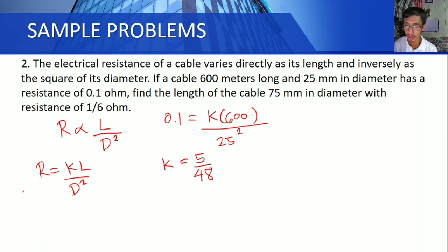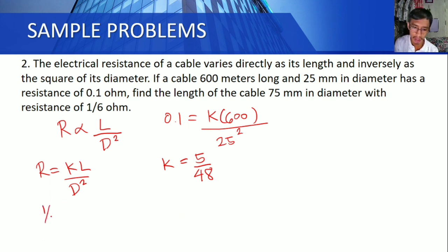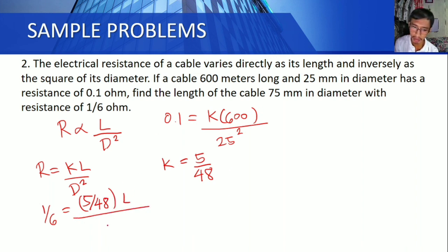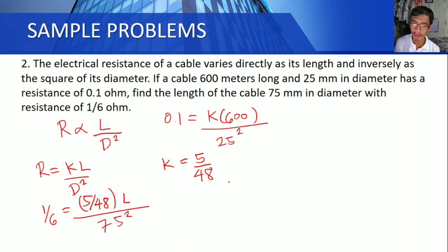Find the length of a cable with a 75 mm diameter and resistance of 1/6 ohm. Substituting into the formula: 1/6 equals (5/48) times L over 75 squared. Solving for L gives L equals 9,000 meters.